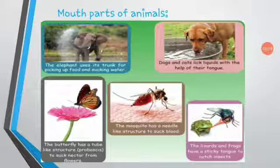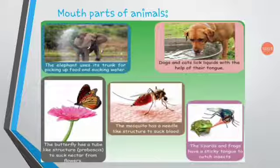We use our mouth parts for cutting and chewing food. Teeth help in cutting, and the tongue helps to taste. Lips help to open the mouth. This is the function of the mouth parts of animals.